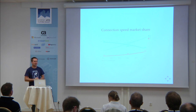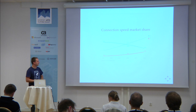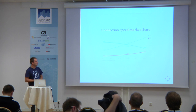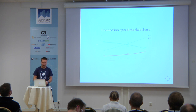It depends where your clients are and who is going to use your mobile application. Cisco shares that kind of information, and last year 4G was about 3% of the world market. If you take a look at the top, almost two-thirds goes to 2G connections — that's worldwide. So you have to deal with that.